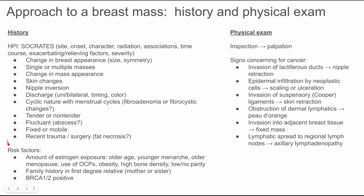Specific questions for a breast mass include: change in breast appearance, asymmetry or change in size, single or multiple masses, changes in mass appearance, skin changes, nipple changes or discharge — noting if it's unilateral versus bilateral, the timing, and color. Ask about the cyclic nature with menstrual cycles, which would suggest a fibroadenoma or fibrocystic changes. Is the mass tender or non-tender? If red, warm, and fluctuant, suspect an abscess, often following mastitis. If fixed with recent trauma or surgery, consider fat necrosis.